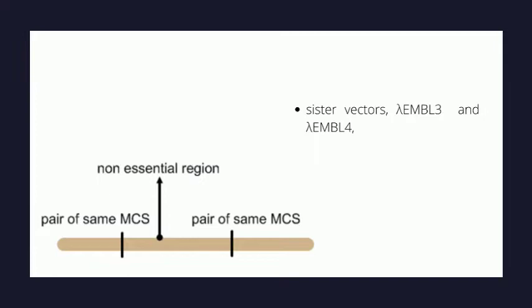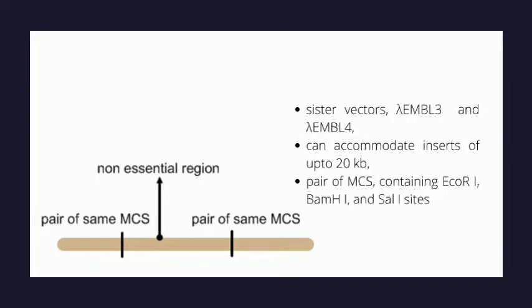The lambda EMBL series, comprising the sister vectors lambda EMBL3 and EMBL4, can accommodate inserts of up to 20 kbp. The pair of MCS on both sides of the stuffer fragment contains EcoRI, BamHI, and SalI sites, which take up the incoming DNA without disturbing the essential region in the vector.